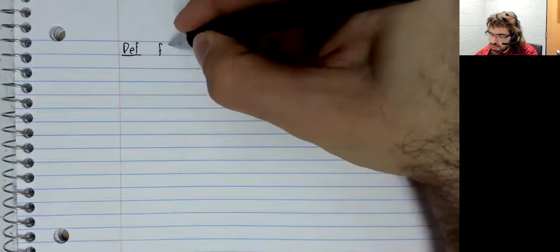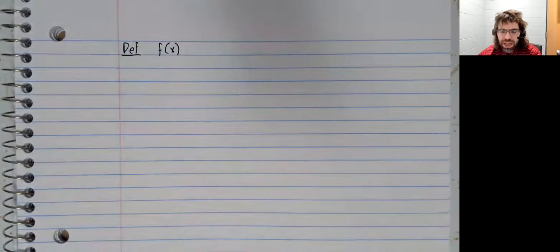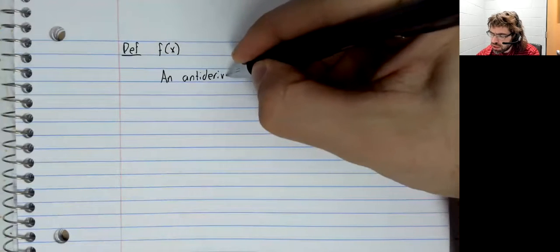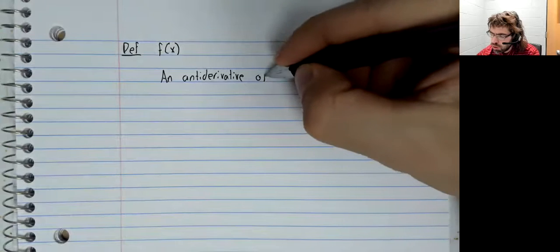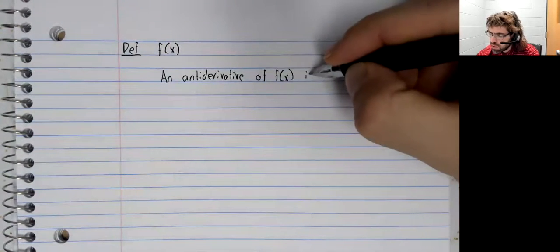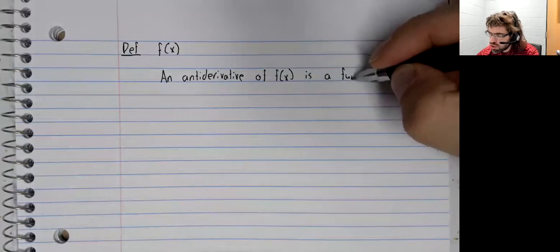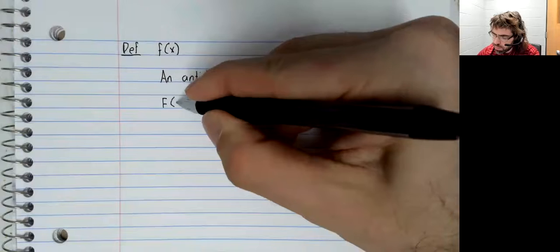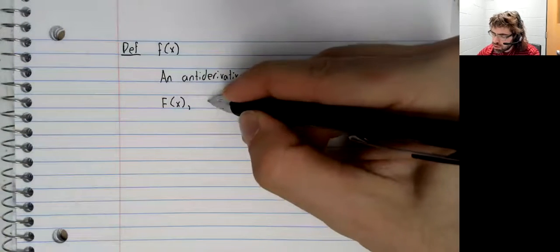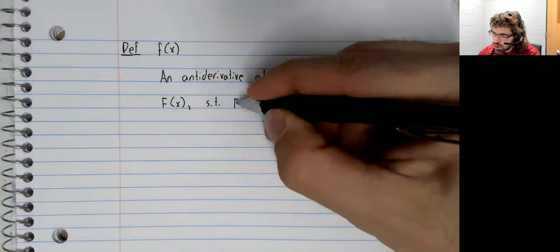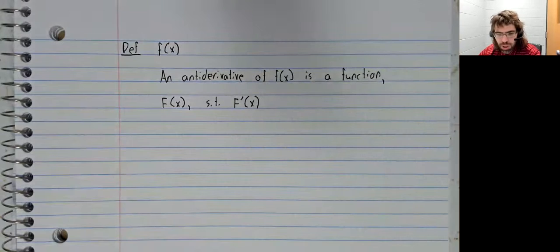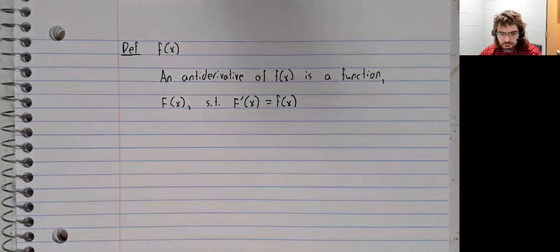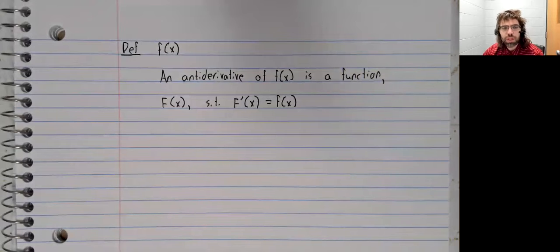Definition. Say that we have a function f of x. An antiderivative of f of x is another function which would traditionally be written capital F of x such that the derivative of capital F of x is lowercase f of x.